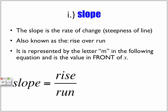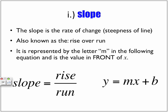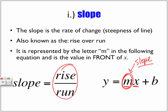Slope is represented by the letter M. M is the value in front of X. So whenever we have the slope-intercept form, this value of M is our slope. Whenever our equation is in the form Y equals MX plus B, whatever number is in front of X is going to be our slope — our rise over run.